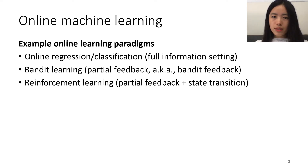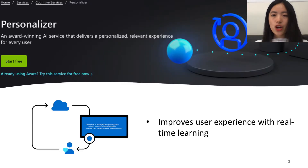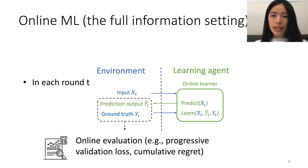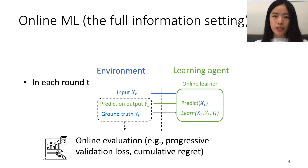It is a cloud-based service that helps customers' applications choose the best content to their users. In this work, as an initial attempt for Online AutoML, we primarily focus on the online learning setting with full information feedback.